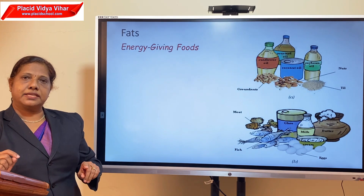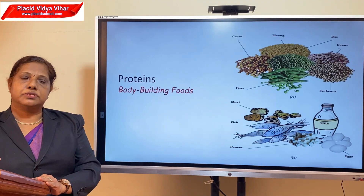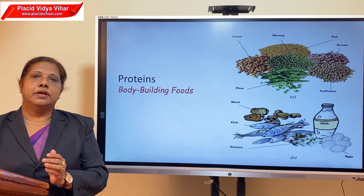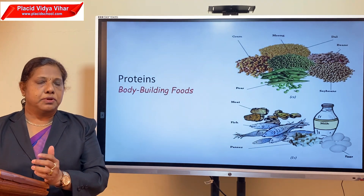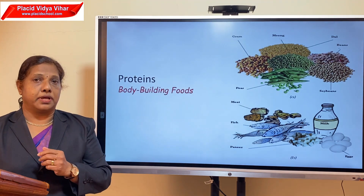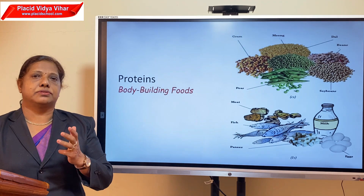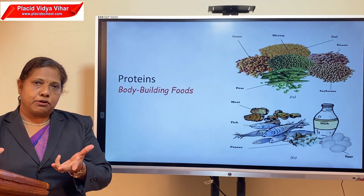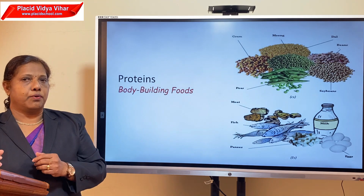Now we can move on to the next nutrient, that is protein. Proteins are also called body-building foods. As growing children you need a lot of protein in your diet because it helps in the growth of your body and also repairs the damaged cells of the body.